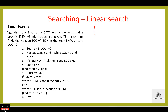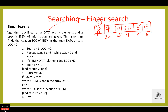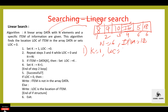Let's see the algorithm for linear search. 'Data' is the name of the array and n is the total number of elements in this array. n is equal to 6, and 'item' is the element that we have to search from the list. Item is equal to 12, and 'loc' is the location. This algorithm finds the location loc of item in the array data. The first step is: set k equal to 1 and loc equal to 0. The second step is: repeat steps 3 and 4 while loc equals 0 and k is less than or equal to n.